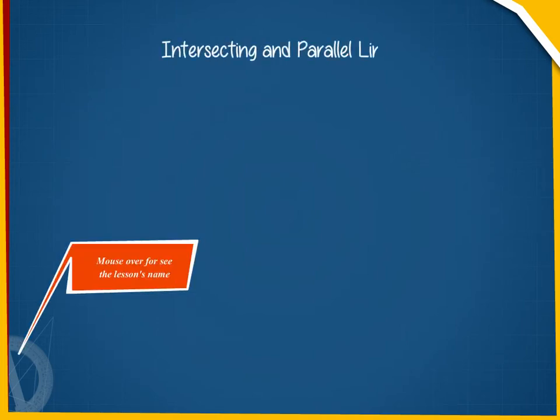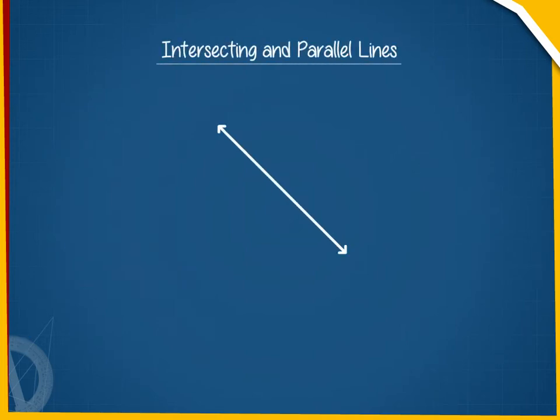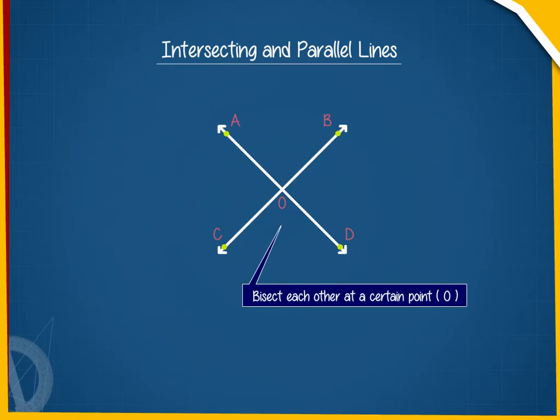Intersecting and Parallel Lines. What is a cross? It is simply a pair of lines that cut or bisect each other at a certain point.